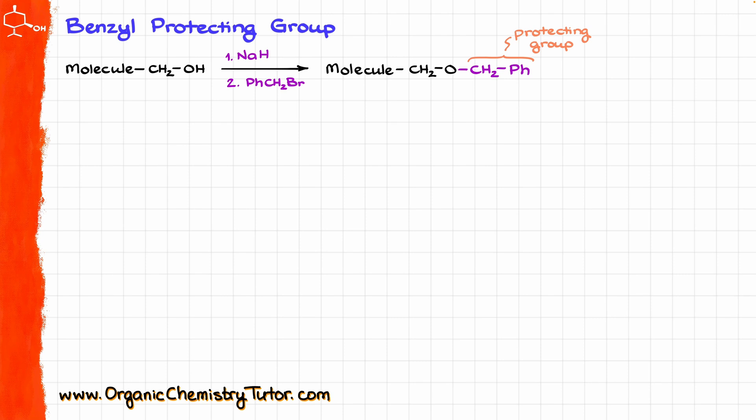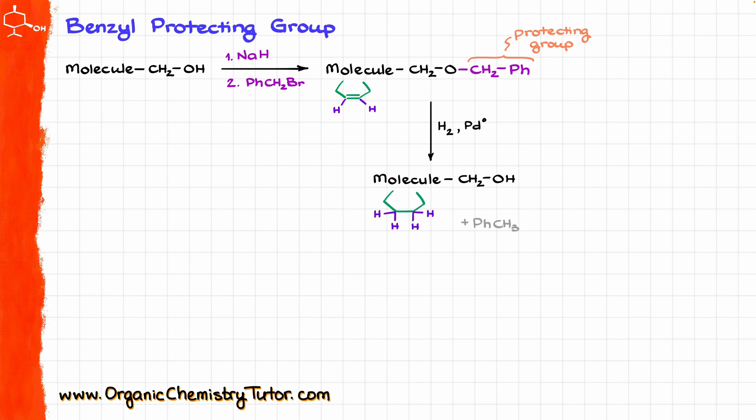But the problem with this protecting group is that it's kind of difficult to remove as well. One of the common methods to remove this group is going to be with hydrogen on palladium or platinum, or any other heterogeneous catalyst of the sort. But the problem here is that if your molecule has a double bond, then hydrogen on platinum or palladium is going to destroy the double bond as well.